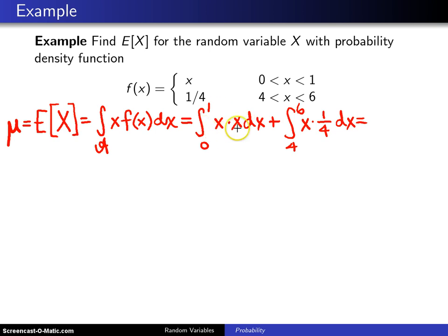When you integrate x squared, you get x cubed divided by 3, and that will be evaluated from 0 to 1. When you integrate x over 4, you get x squared over 8, and that will be evaluated from 4 up to 6.